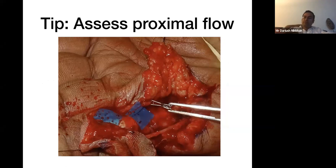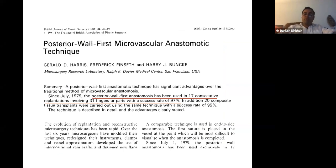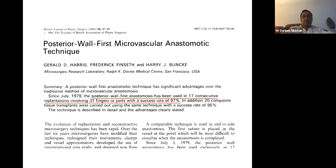Before doing the anastomosis, test for good proximal flow and inspect the vessel under the microscope for damage — resect back as needed. The posterior wall first technique, described by Buncke's group in 1981, is the method I use for arterial repair. You do the most difficult stitches first, in a confined space, without needing double clamps and rotation. They reported a 97% success rate in 31 fingers using this technique in the British Journal of Plastic Surgery.